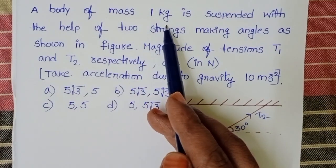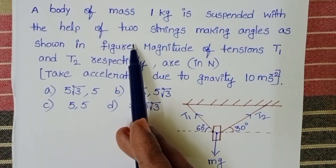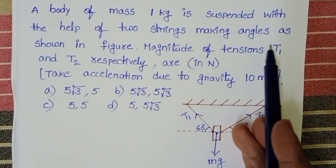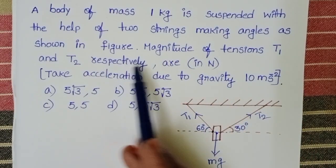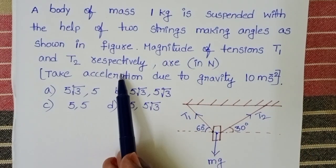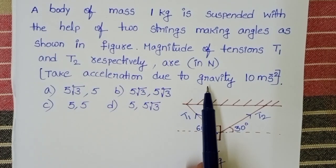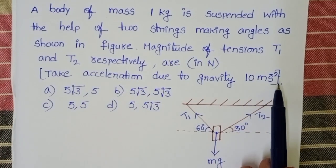A body of mass 1 kg is suspended with the help of two strings, making angles as shown in the figure. Magnitude of tensions T1 and T2 respectively, take g value 10 meter per second square.